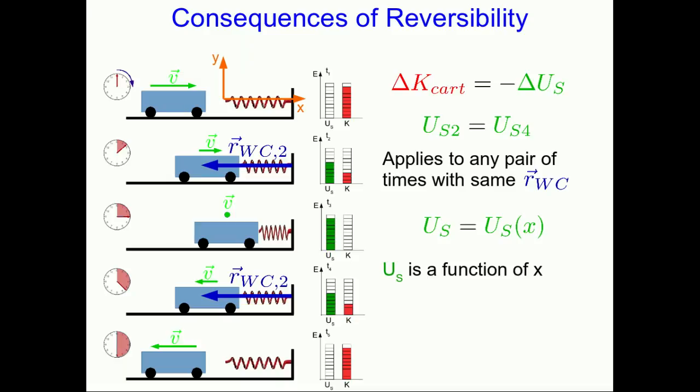This is not just true for spring potential energies, it's true for any potential energy. Any potential energy always just depends on a relative position between two interacting objects in the system, and if only one of them is moving, then we can always rewrite that as a function of just the position of one object.